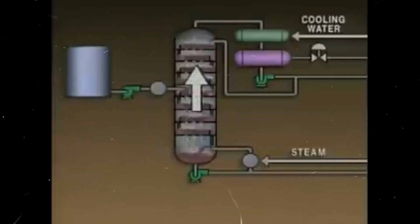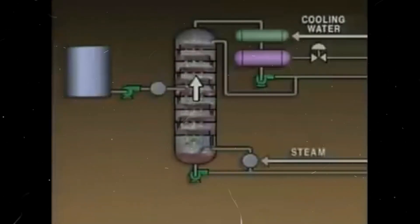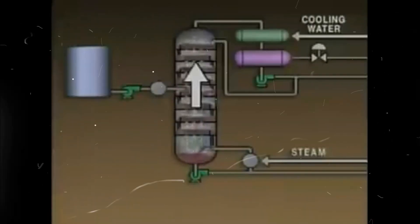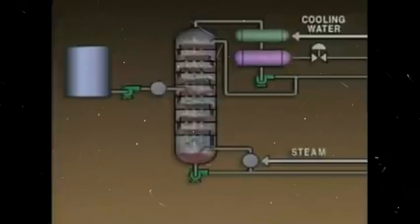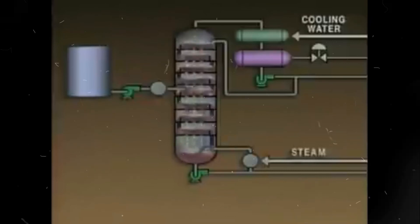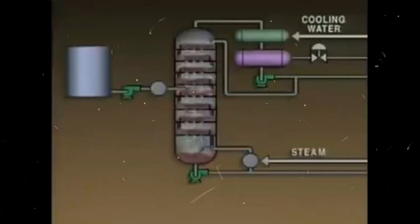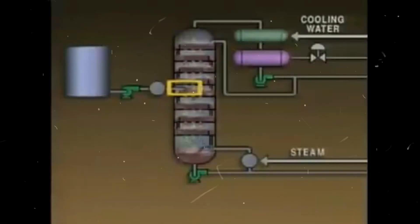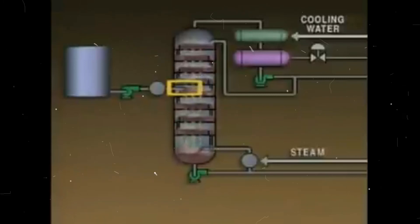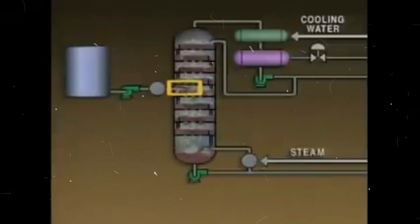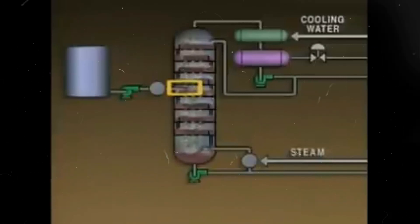Generally, if the rate at which vapors move up the tower decreases, the differential pressure will also decrease. And if the rate at which vapors move up the tower increases, the differential pressure will increase. Changes in differential pressure may indicate that a problem exists. For example, an increase in differential pressure could indicate that the feed rate is too high. Too much feed entering the tower will overload it, causing the differential pressure to increase and the tower to be unable to make the desired separation. In this case, it might be necessary to decrease the feed rate.